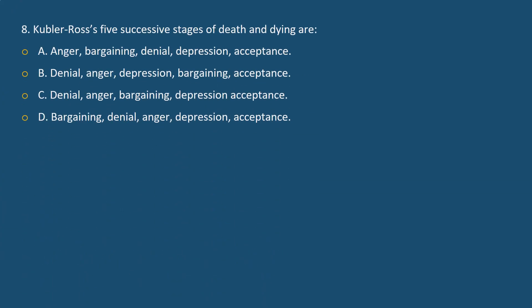Question 8. Kübler-Ross's 5 successive stages of death and dying are: A. Anger, bargaining, denial, depression, acceptance. B. Denial, anger, depression, bargaining, acceptance. C. Denial, anger, bargaining, depression, acceptance. D. Bargaining, denial, anger, depression, acceptance. Answer C. Explanation: Kübler-Ross's 5 successive stages of death and dying are denial, anger, bargaining, depression, and acceptance.